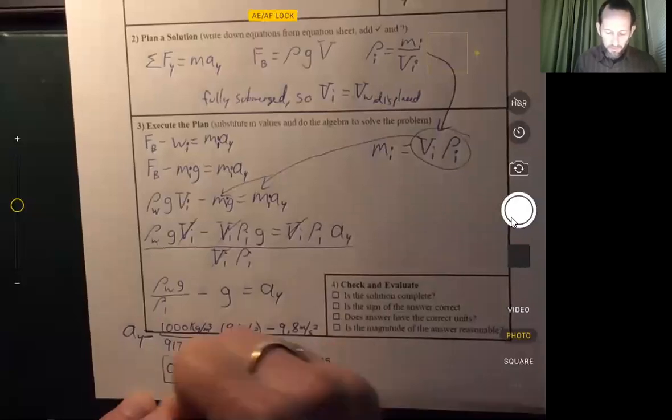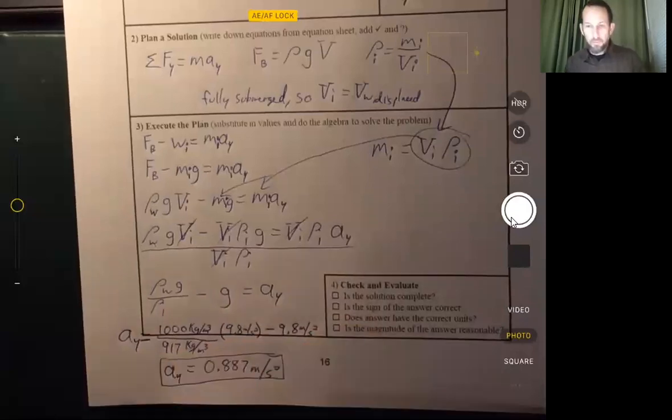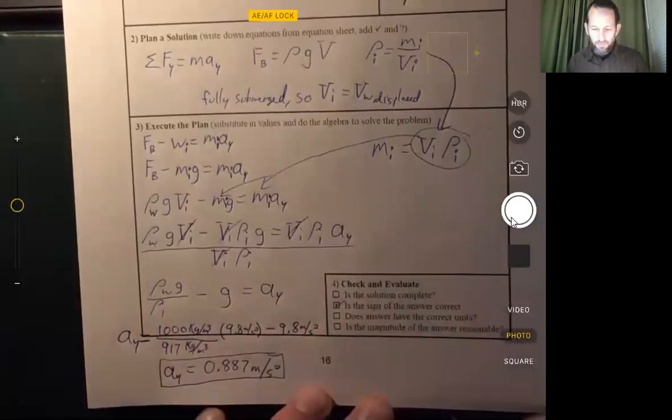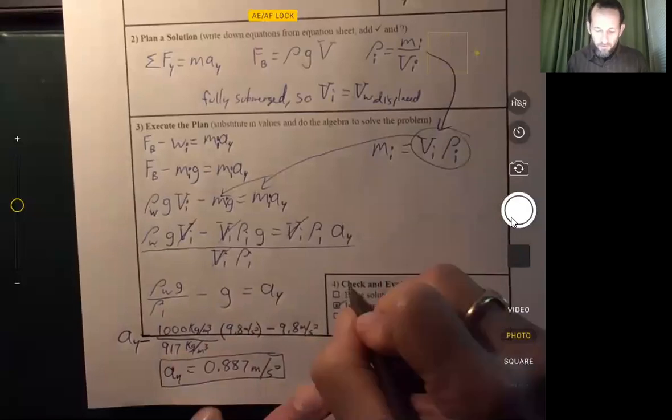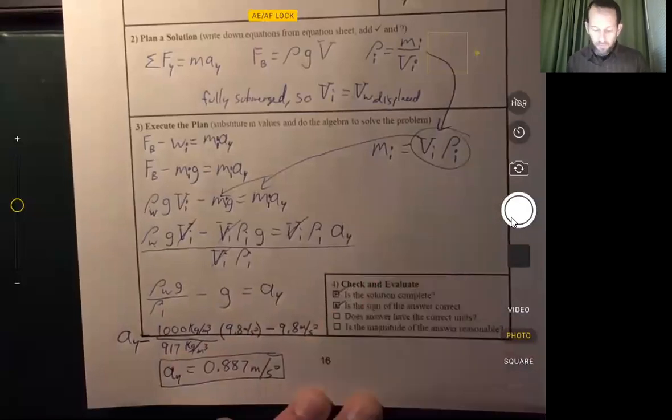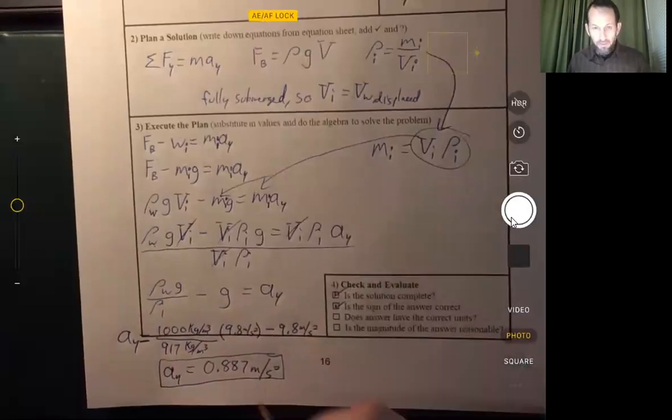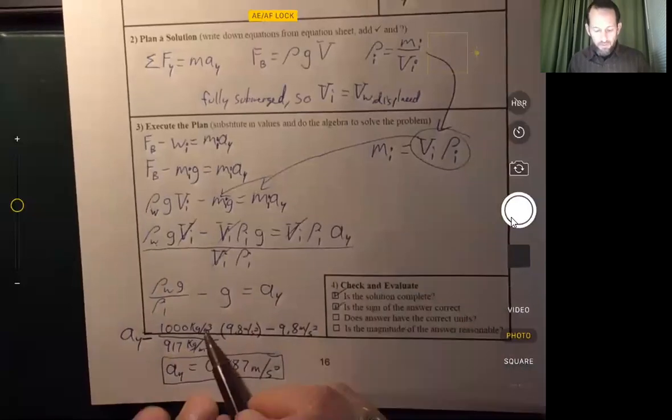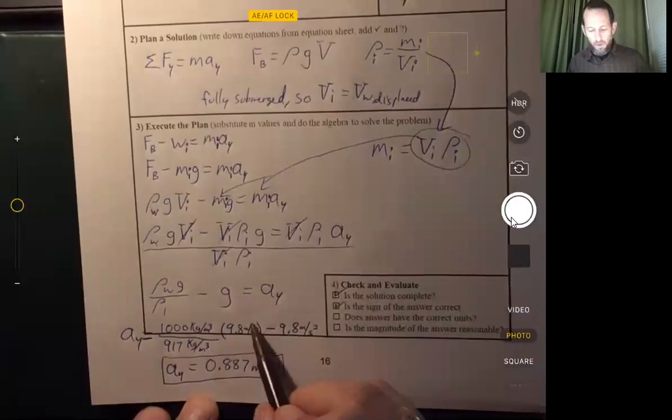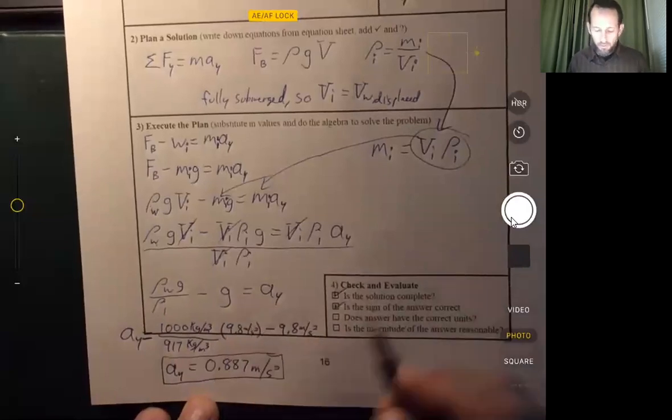It did come out to be a positive value, which we expected. The sign's correct. It only asked us to find the acceleration. So that's good. Correct units. We had density over density, so those units cancel. So that leaves us with units of meters per second squared minus meters per second squared. So the units are correct.